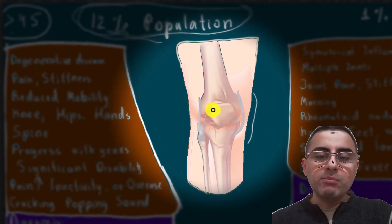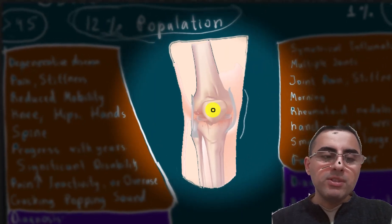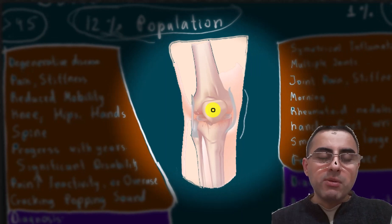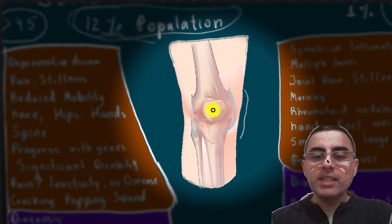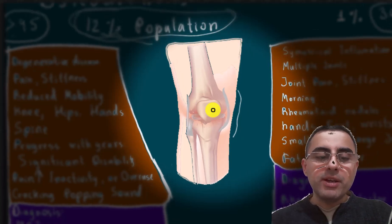The most common symptoms of osteoarthritis most commonly affect the knee, sometimes hips, hands, and spine. This progresses over years and can cause significant disability. Pain is stronger and increases in the morning or after inactivity or overuse of the joint.